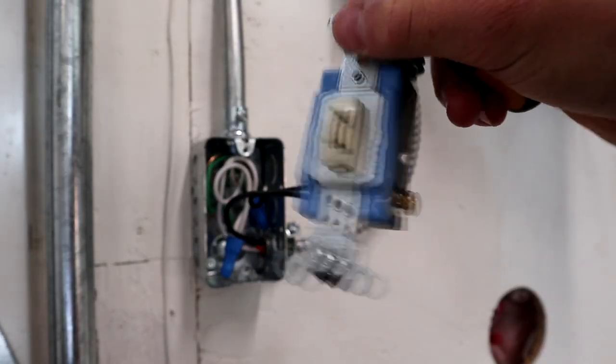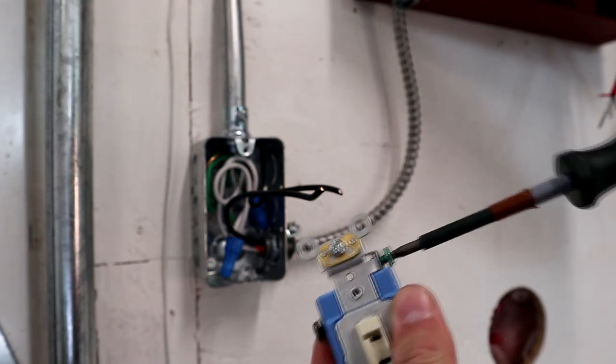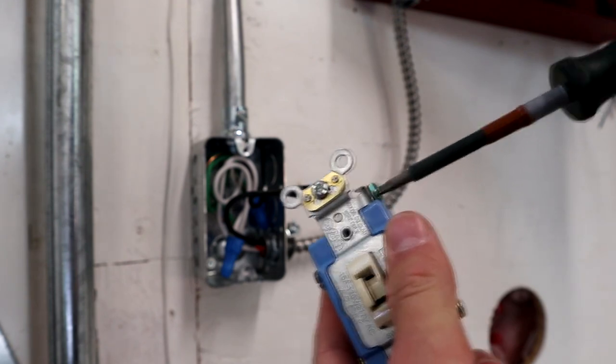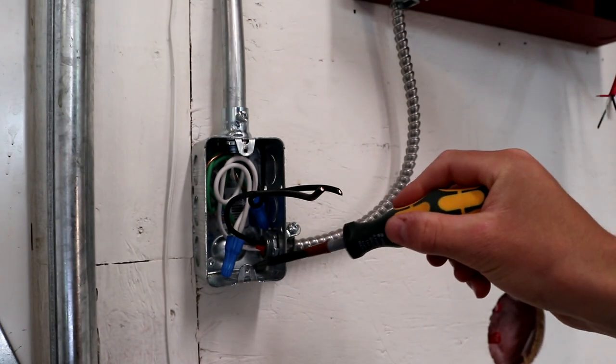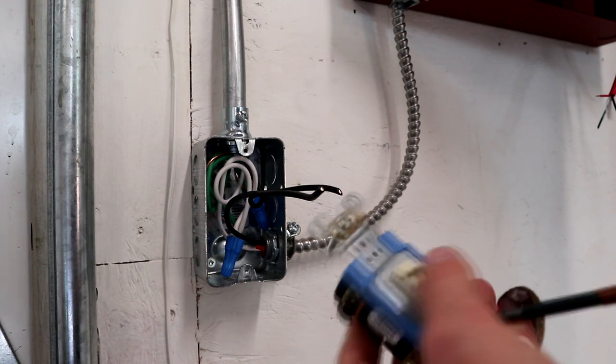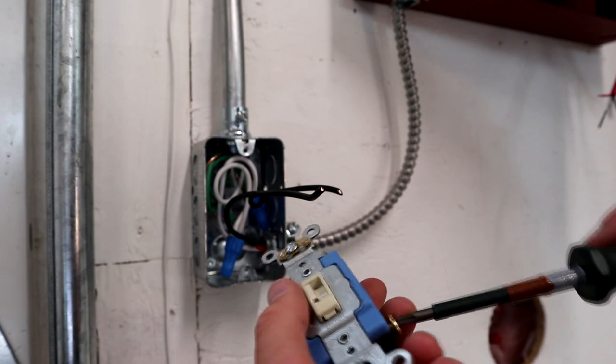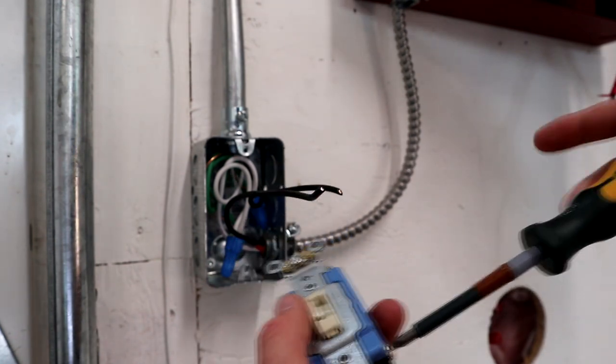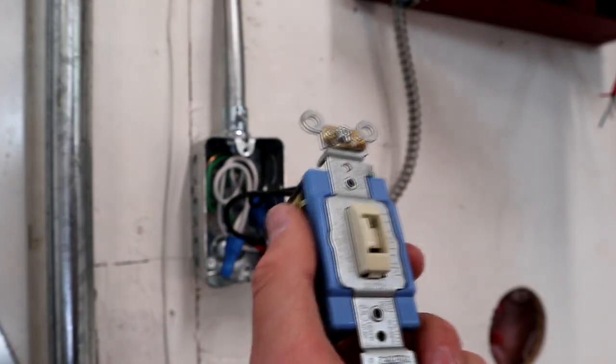Now we're just going to tighten the terminals that we know we don't need. I am in Canada, so we do not need ground on our switches because all of our boxes are bonded. Even our plastic boxes in Canada do have a bonding strip that goes from the back up and around that bonds the switch through its screw. You can use it, there's nothing wrong with doing that, but you don't have to. We won't need this traveler wire right here, so we can put this one in.